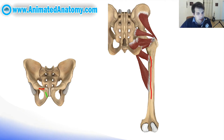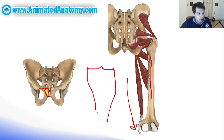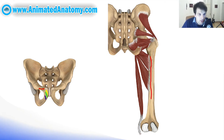Our next muscle is the gracilis muscle. It has its origin on the inferior pubic ramus and its insertion on the pes anserinus. Now, what is the pes anserinus? Here you have the tibia from the anterior perspective and the insertion of the collateral ligament. There where the collateral ligament inserts, you have the common tendon insertion for three muscles. One of these muscles is the gracilis muscle. The other two muscles that join the gracilis to create the pes anserinus are the sartorius and the semitendinosus.